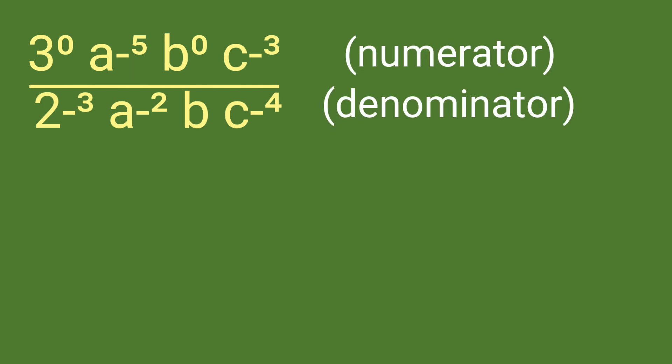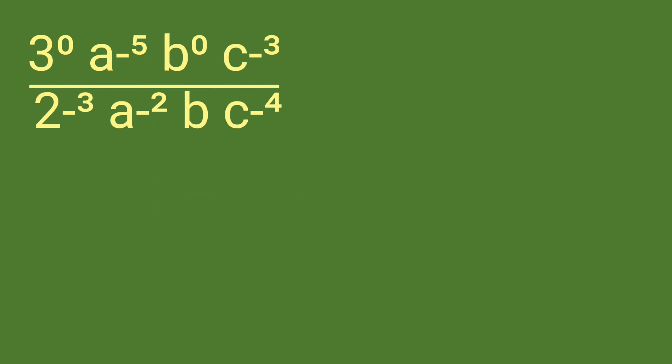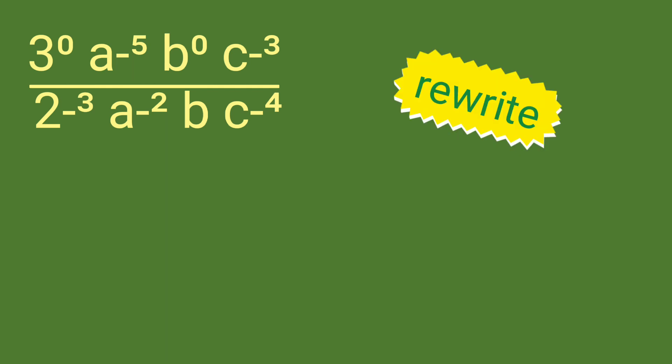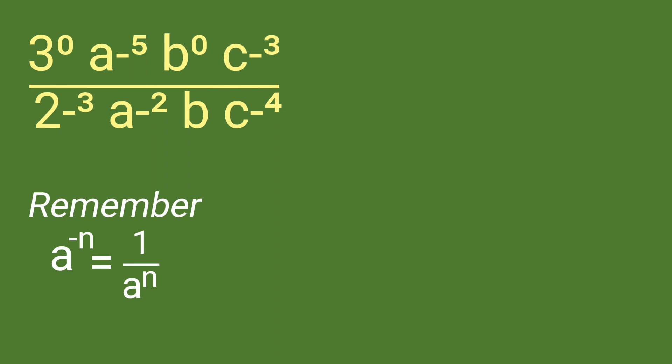This expression has a numerator and denominator, but it is not yet a rational number. We have to transform it into a rational algebraic expression by rewriting with positive exponents. Remember: a raised to negative n equals 1 over a raised to n; 1 over a raised to negative n equals a raised to n; and a raised to 0 is always equal to 1.